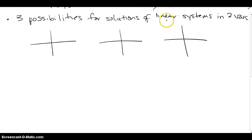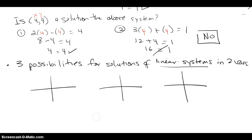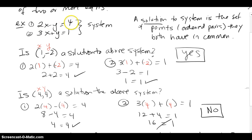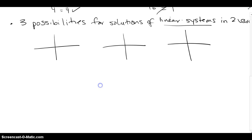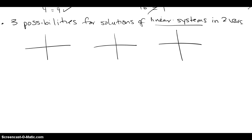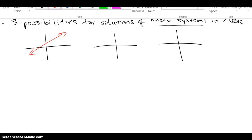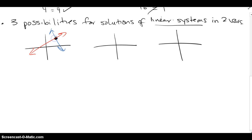Now there are three things that could happen when we're looking at linear systems — systems that consist of one line and a second line, and we want to know the solution, which is all the things they have in common. The first thing that could happen is one line graphs here and another line graphs there, and you see one ordered pair they have in common. This would be one solution, and it's called a consistent system.